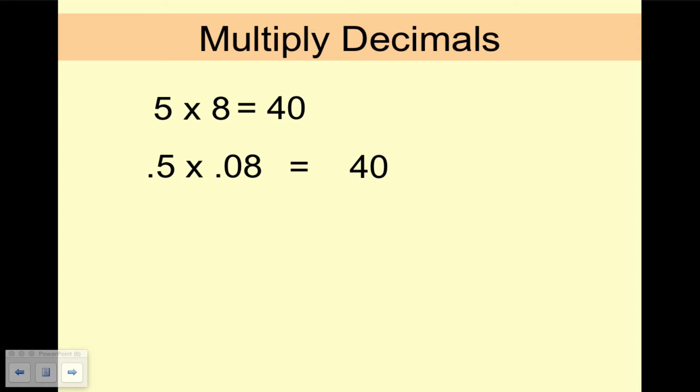So 0.5 has 1 place, 0.08 has 2. We want 3 places on our answer, and it will be 0.040, which we could then rewrite as 0.04.